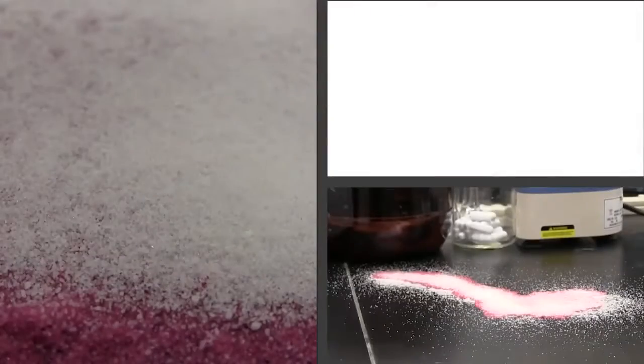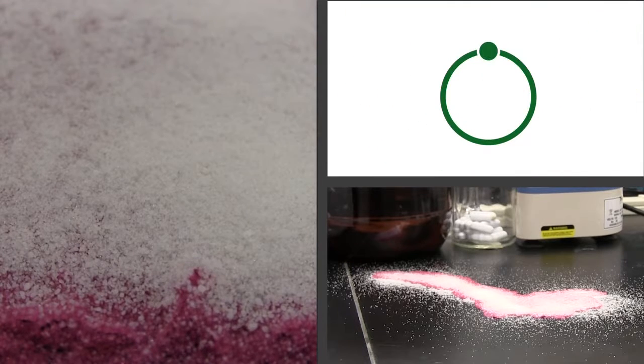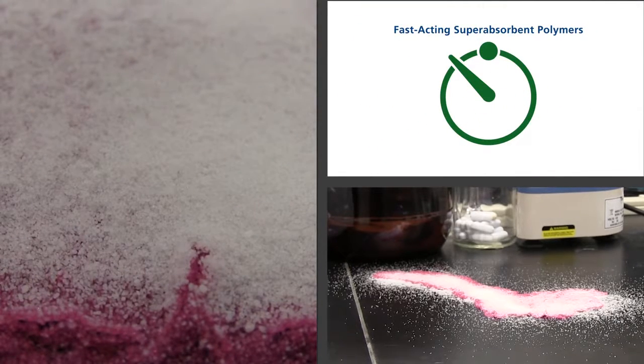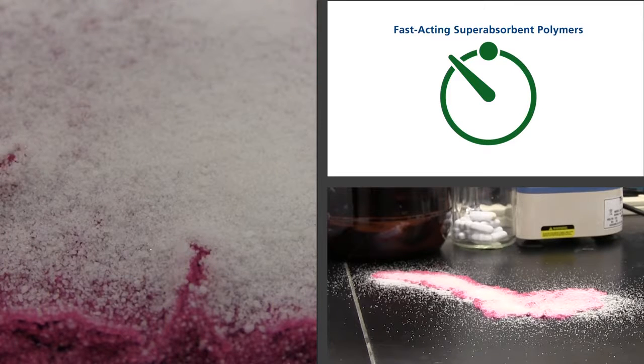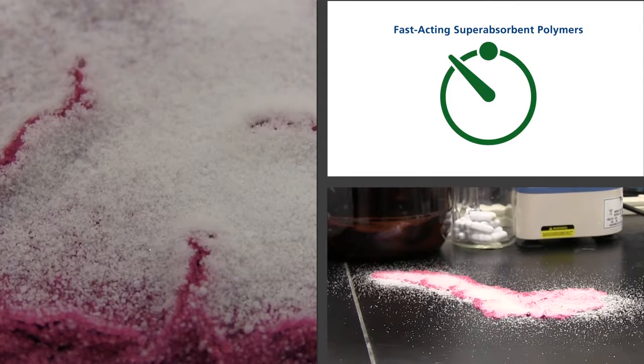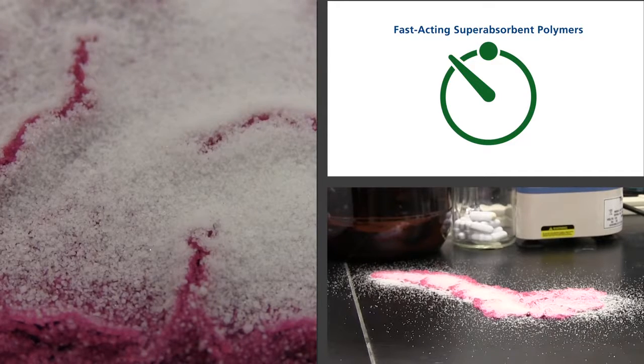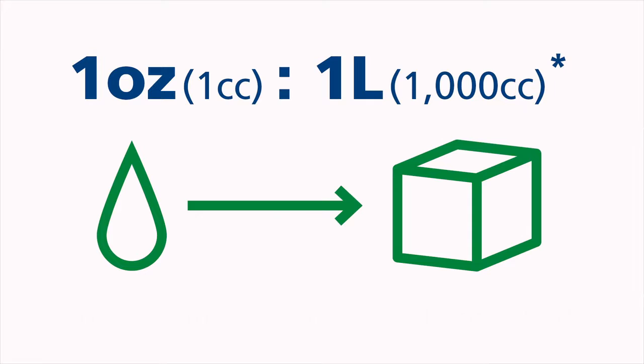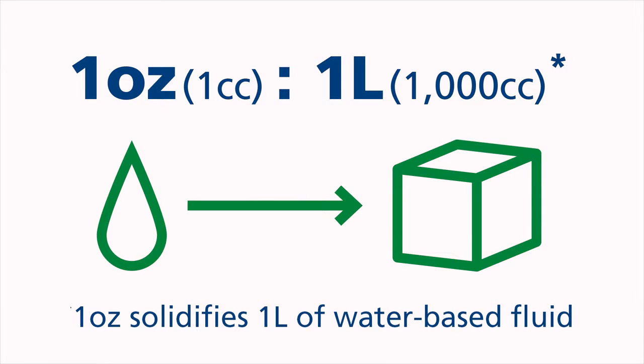One of the most important benefits to choosing Green Z is that it contains fast-acting super absorbent polymers. These are high quality granules that have the unique ability to hold large amounts of absorbed water-based fluid, even against pressure. Just one ounce of Green Z can solidify over one liter of fluid.